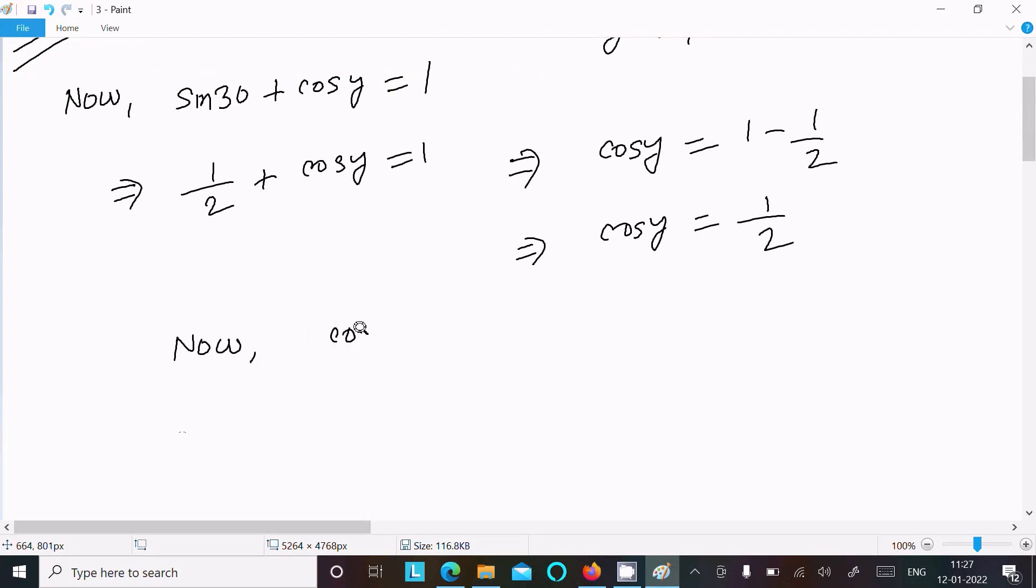Now cos y equals 1 by 2. Cos 30 degrees is root 3 by 2, cos 60 degrees is 1 by 2. So we can write this as cos 60 degrees. Equating: cos y equals cos 60.